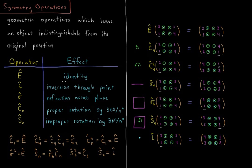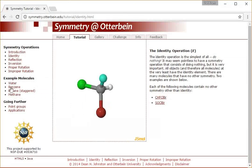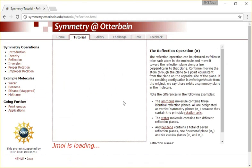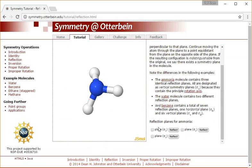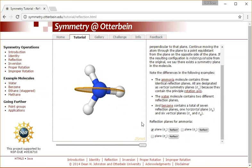All of these operations are shown on Otterbein. They show the identity, which is to do nothing. They show reflection, where we have the example of ammonia, and I can reflect that through any of the three planes that I choose.